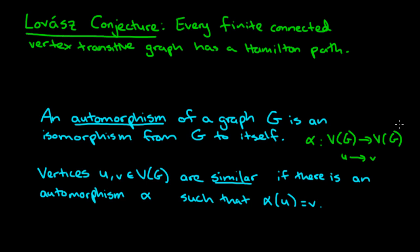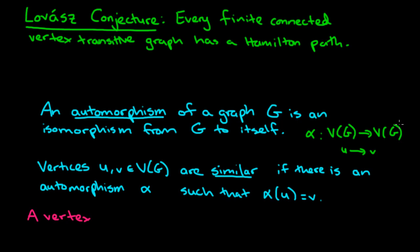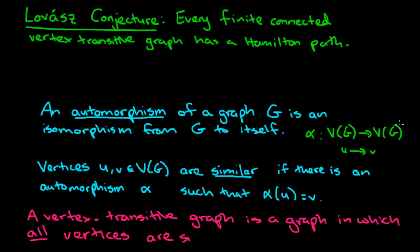So why do I mention all of this? Well, the reason is because a vertex transitive graph is a graph in which all of the vertices are similar. In other words, you can take any pair of vertices in the graph, and you will be able to find an automorphism which maps one of those vertices to the other.